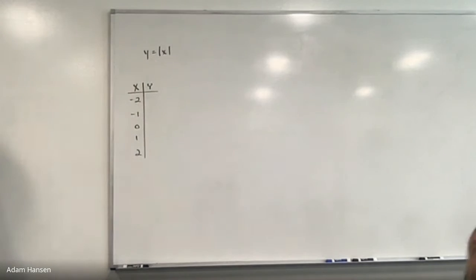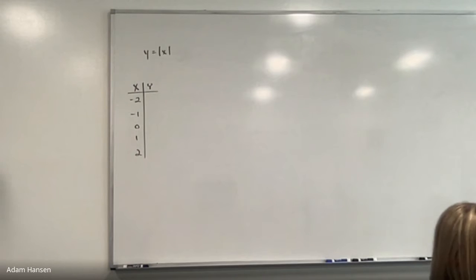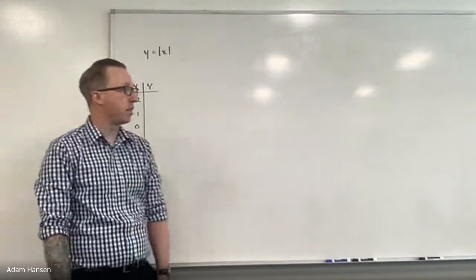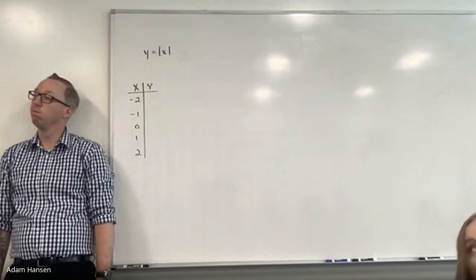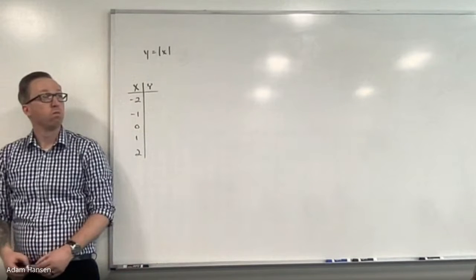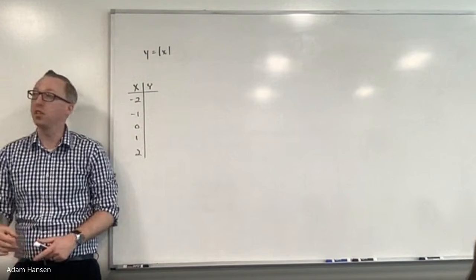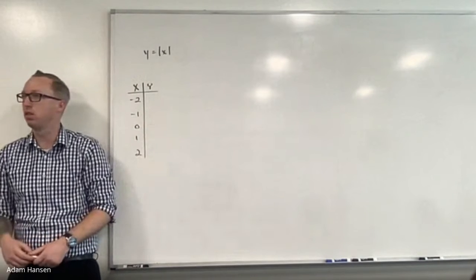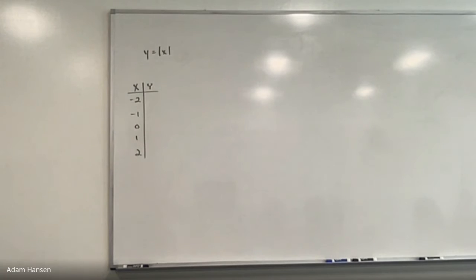What do you know about absolute value? It's the two vertical bars for notation. It makes everything positive. Why does it make everything positive? What's the definition of absolute value? Absolute value, mathematically, is a distance from zero. Would I ever say that West Des Moines is negative 10 miles away? Distance is always positive — it doesn't matter which direction. It's either above zero or below zero. It's just the distance from zero.